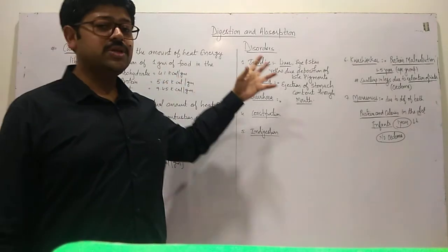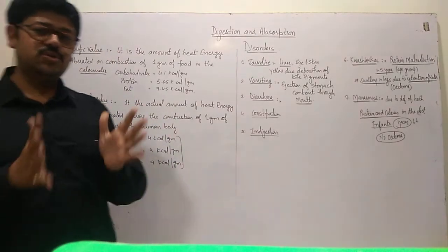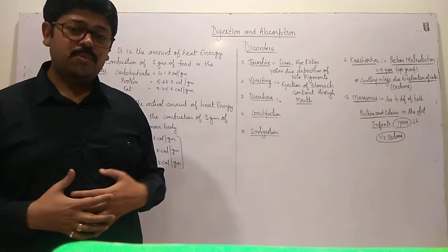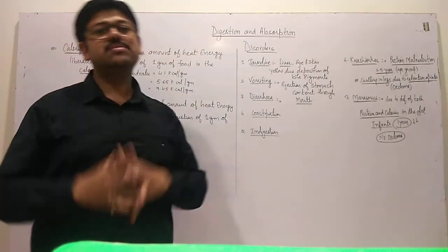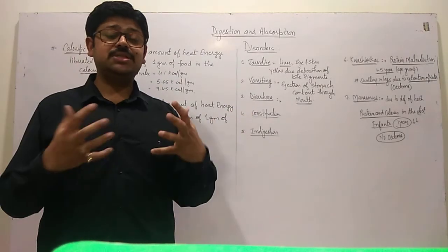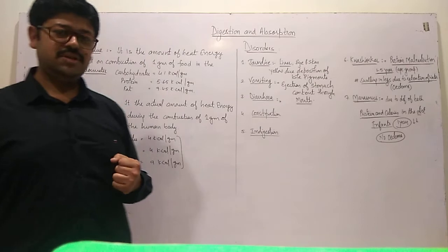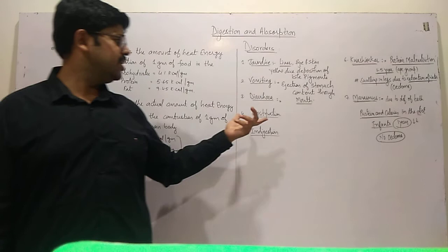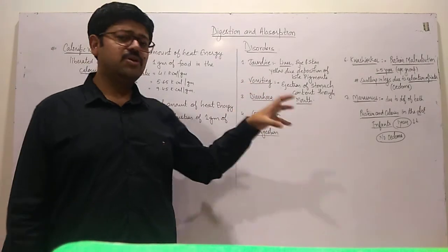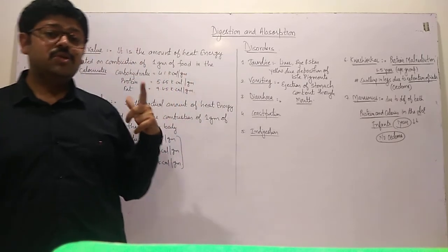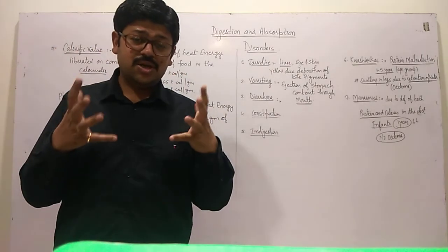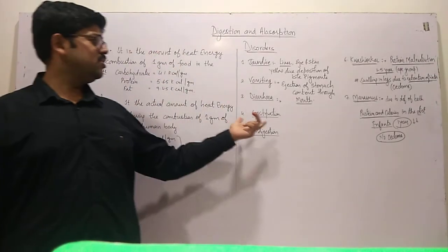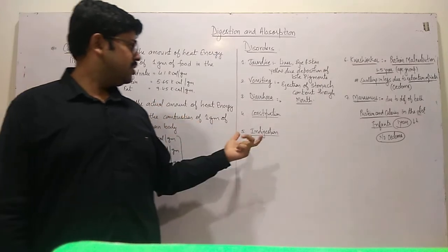Jaundice is due to deposition of bile pigments. Vomiting is controlled by the medulla. Diarrhea may be due to bacterial, viral, protozoan, or helminth infection. Then there's constipation and indigestion.